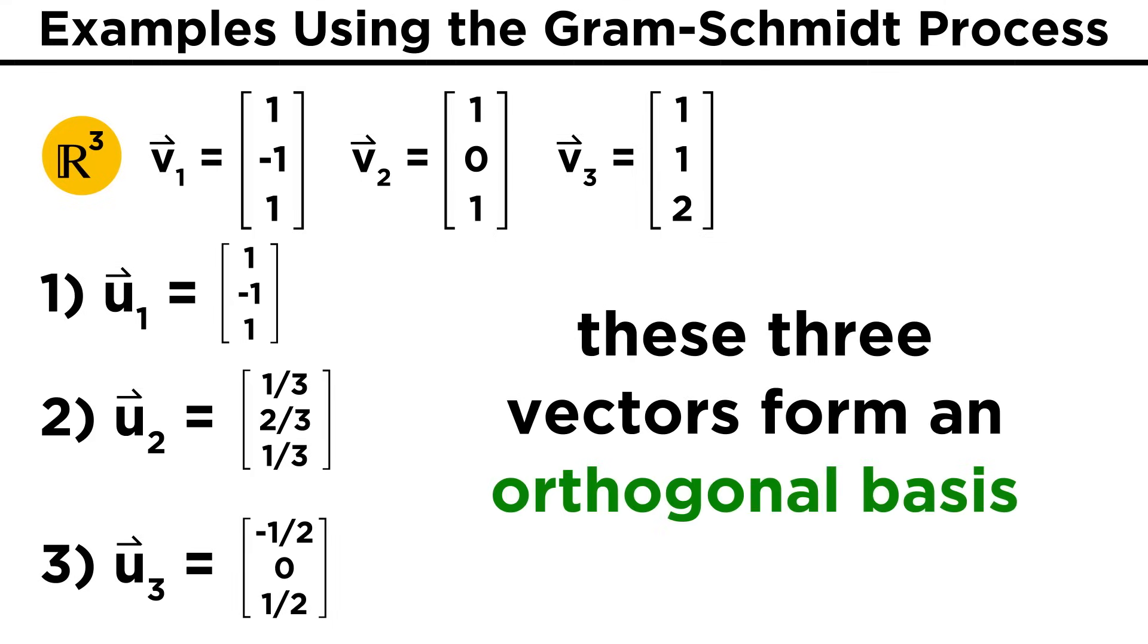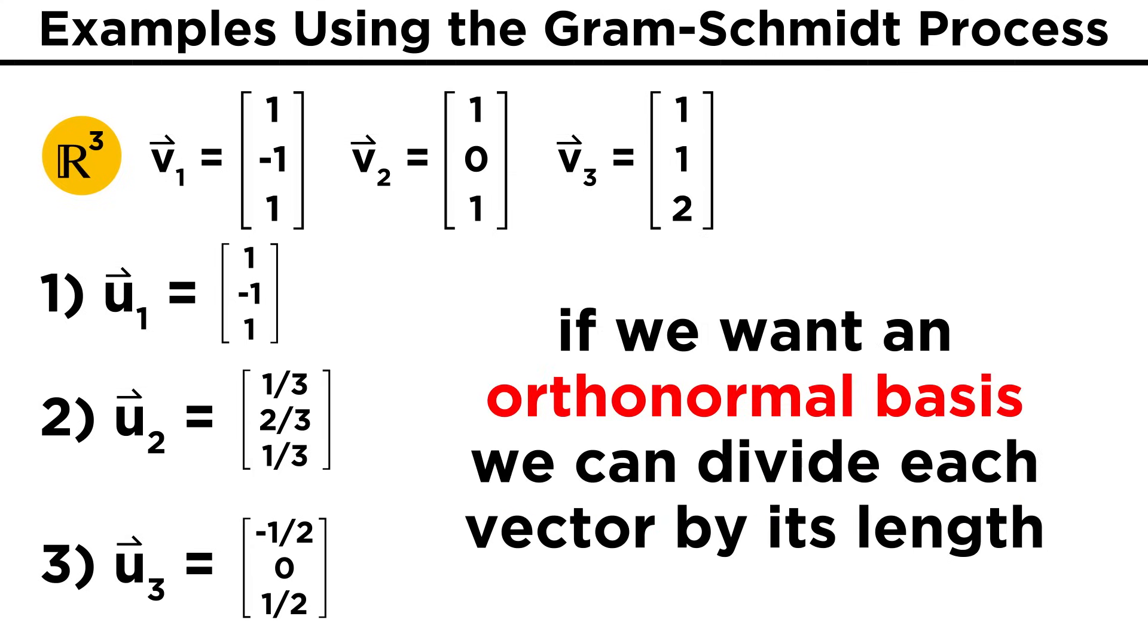These three vectors form an orthogonal basis. Now if we wanted an orthonormal basis, as we know, we would take each of these resultant vectors and do what we have already learned, dividing each vector by its length, thus creating a new set of vectors of length one. And since they are already orthogonal, these vectors will be orthonormal.